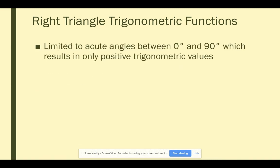And one of the challenges with right triangle trigonometry is that you're limited to acute angles, which measure somewhere between 0 and 90 degrees. And because of that fact, we only end up with positive trigonometric values. And we talked about that previously.